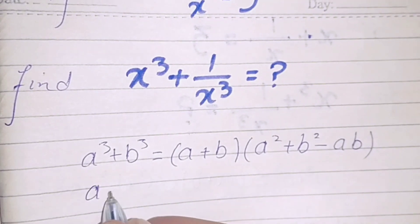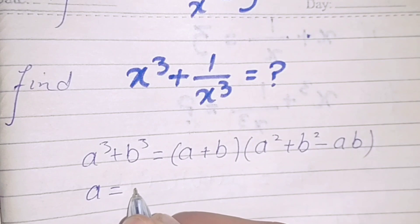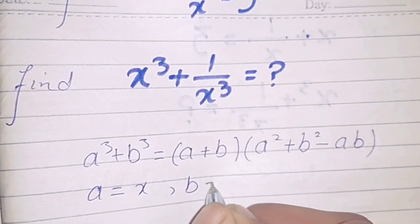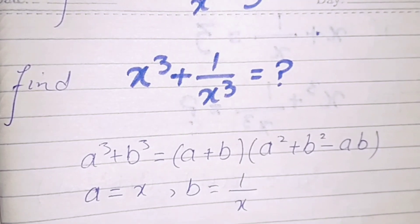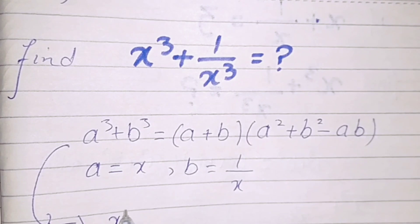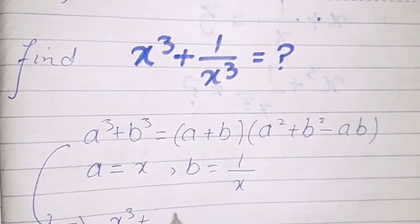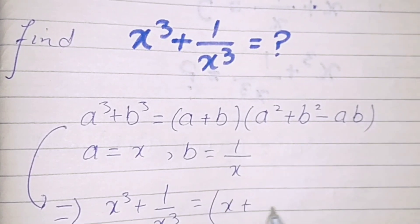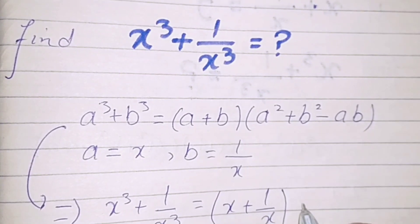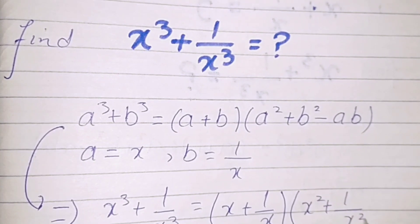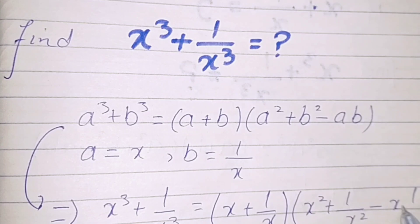Replace a by x and b by 1 by x. So this will become x cubed plus 1 by x cubed is equal to x plus 1 by x, into x squared plus 1 by x squared minus x times 1 by x.